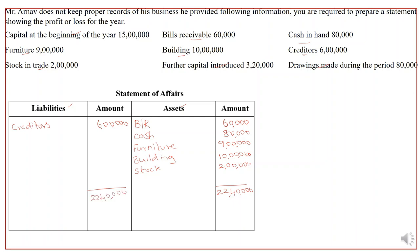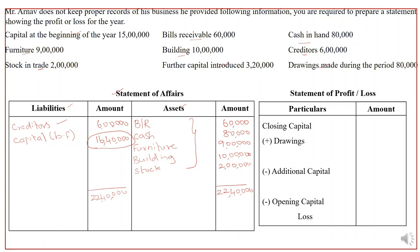The total is written on both sides. The balancing figure is 16,40,000, which is the capital at the end of the year. Closing capital is not given in this question, so we prepared the statement of affairs, recorded all assets and liabilities, and the difference — the balancing figure — is capital at the end of the year, which is 16,40,000.